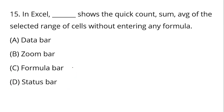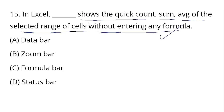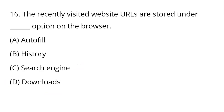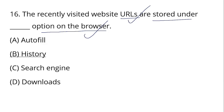In Excel, the status bar shows a quick count, sum, and average of the selected range of cells without entering a formula. The recently visited website URLs — Uniform Resource Locators — are stored under the History option in the browser.